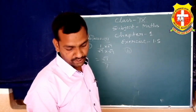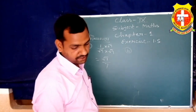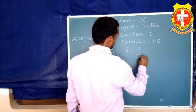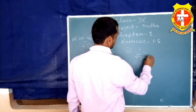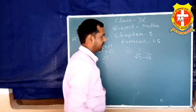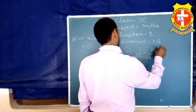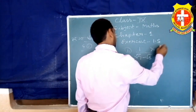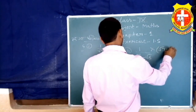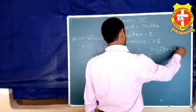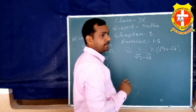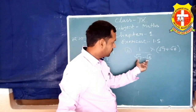अब हम परिमेयकरण (rationalization) देखते हैं: 1/(√7 − √6) का हर का परिमेयकरण करने के लिए क्या करेंगे? हम इसके हर में जो चिह्न है उसे बदलकर गुणा करेंगे — यानि (√7 + √6) से गुणा करेंगे।